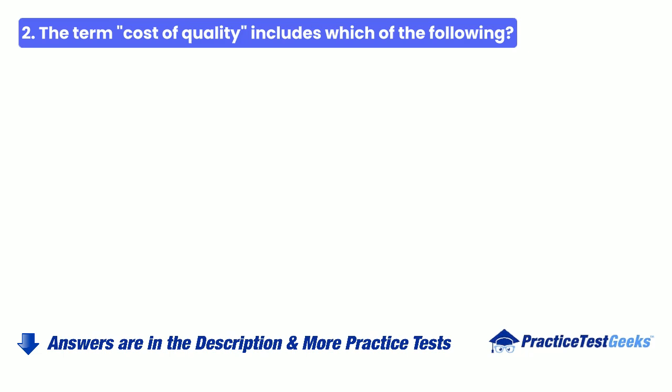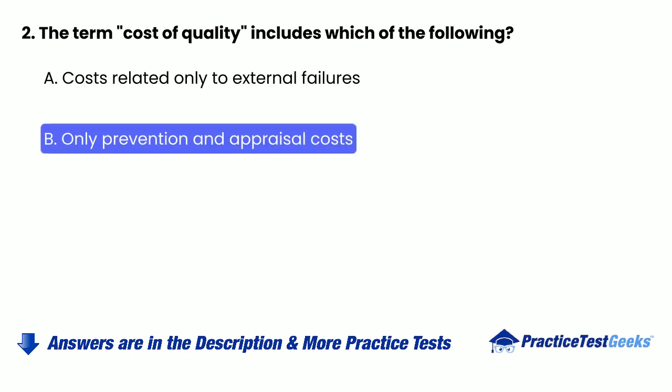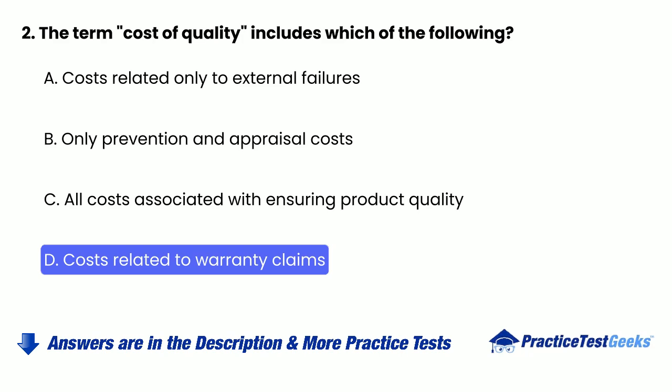2. The term cost of quality includes which of the following? a. Costs related only to external failures. b. Only prevention and appraisal costs. c. All costs associated with insuring product quality. d. Costs related to warranty claims.